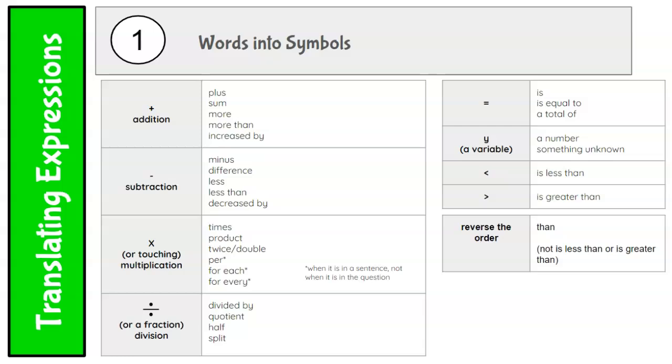Here are all the different words and what symbols they mean. So for example, plus: sum, more, more than, increase by, that's all plus. And you can read through these. I would encourage you to write them down, take a screenshot, and write them down.